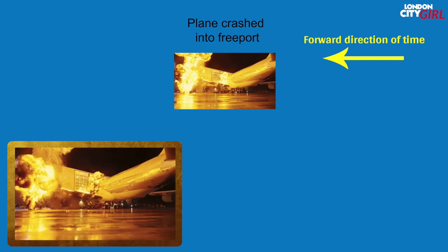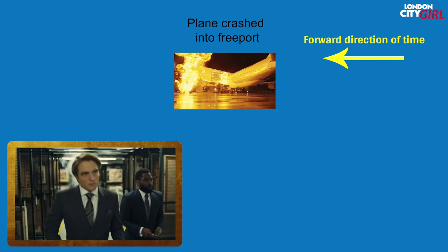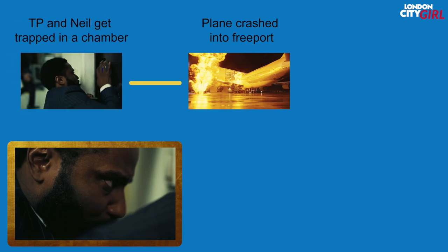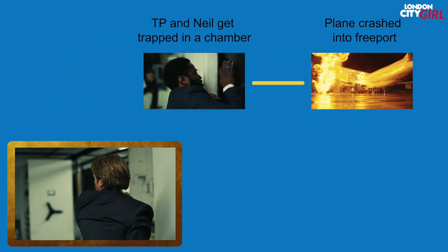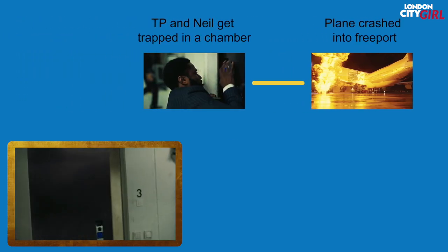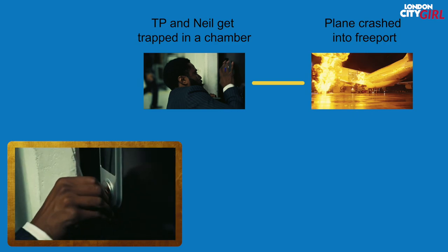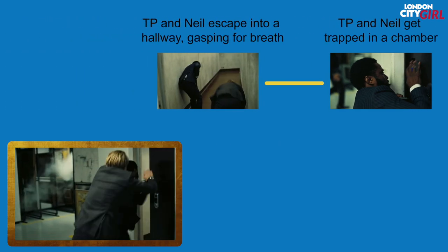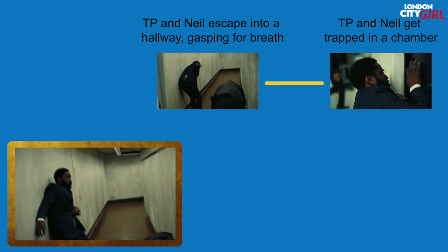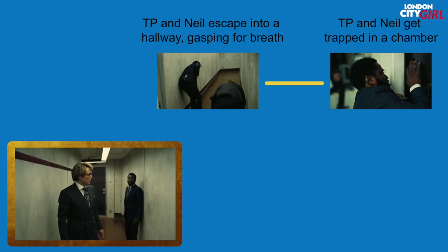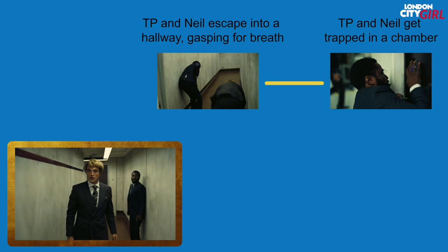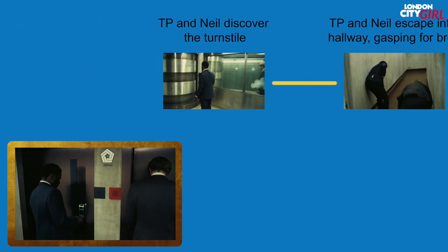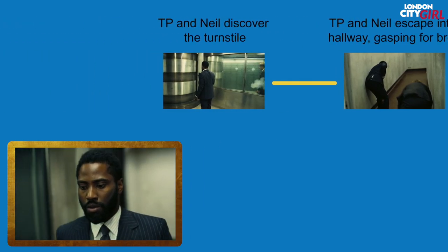As soon as the plane crashes into the Freeport, the protagonist and Neil start executing their plan to get into the inner chambers. They get stuck in one of the chambers which has had all the air displaced out of it as a result of security processes triggered by the plane crash. The protagonist and Neil manage to escape into a hallway gasping for breath. After they've recovered, Neil tells the protagonist he senses they are not alone.